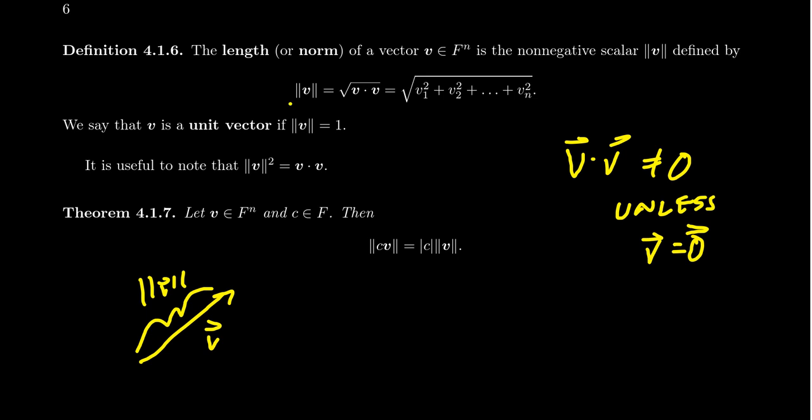The norm of a vector is defined to be the square root of v dot v. When v is a real vector, that's just the usual dot product. When v is a complex vector, it's going to be the Hermitian product. So if v is a column vector in Fⁿ, where Fⁿ is either Rⁿ or Cⁿ, then the dot product with itself produces the sum v₁² + v₂² + v₃² + ... + vₙ², where the entries of v are v₁, v₂, up to vₙ. You put that inside the square root, and that gives you the norm of the vector.